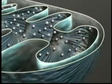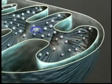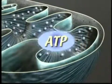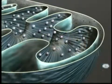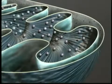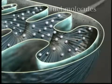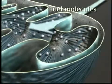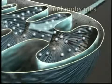The knobs are where ATP is synthesized. Simply put, a mitochondrion is an energy transformer where energy in fuel molecules such as pyruvic acid is transferred to ATP.